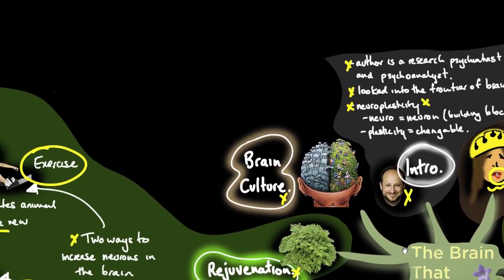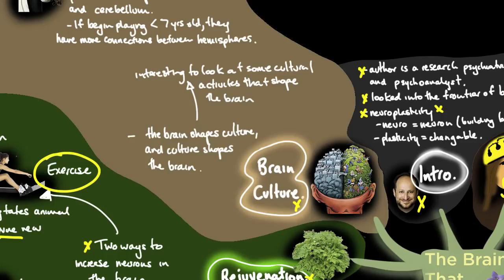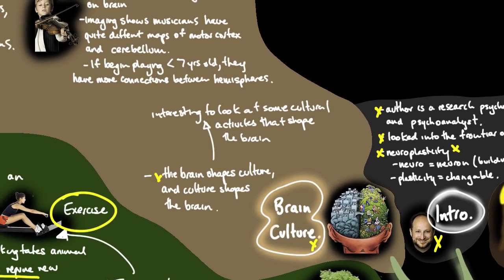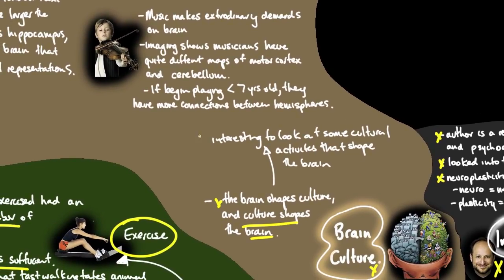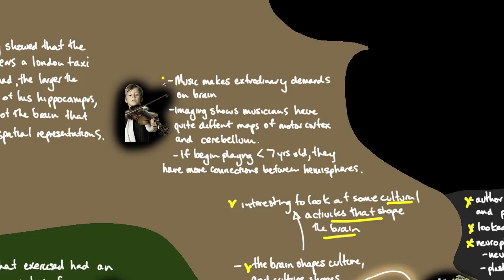Let's look at the next topic, brain culture. How the brain shapes culture and culture shapes the brain. Let's look at a couple of interesting cultural activities that shape the brain. Music makes extraordinary demands on the brain. Brain imaging shows that musicians have quite different maps of the motor cortex and the cerebellum to non-musicians. In particular, if a musician starts playing before roughly seven years of age, they have even more connections between the two brain hemispheres. The bridging is more extensive with someone that's been playing music since they were very young.